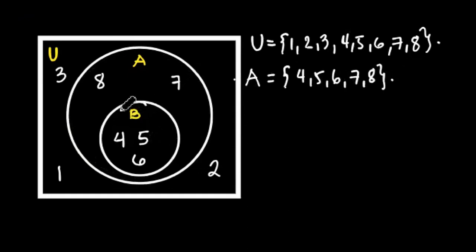Set B is included because set B is inside set A. So look at set B. This is just our set B. So 4, 5, and 6 are its only elements.